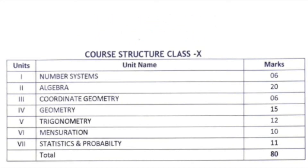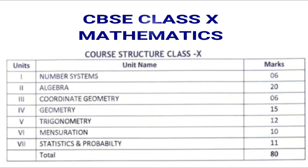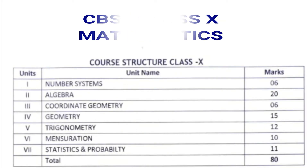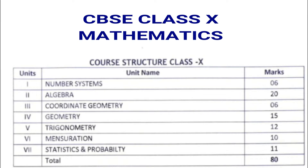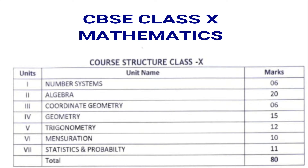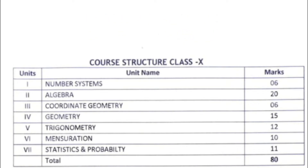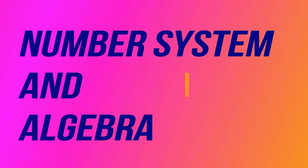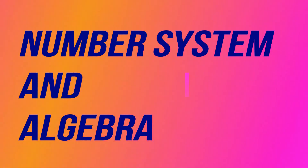In this video we will discuss about the first two units: number system and algebra. Number system carries 6 marks, algebra carries 20 marks. Next, coordinate geometry 6 marks, geometry 15 marks, trigonometry 12 marks, mensuration 10 marks, statistics and probability 11 marks. The total marks of your mathematics paper is 80. In this video we'll discuss only the first two units.